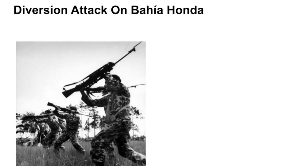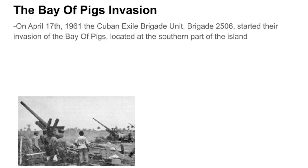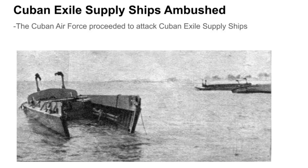On April 16, 1961, a small force of Cuban exiles was sent to Bahia Honda as a diversion to distract the Cuban army. On April 17, 1961, the Cuban exiled brigade unit, Brigade 2506, started their invasion on the Bay of Pigs on the southern part of the island. The CIA anticipated the attack would take Castro by surprise, but a radio station at the Bay of Pigs broadcasted every detail of the attack plan across the island, leading to the Cuban exiles being ambushed and their ships sabotaged by the Cuban air force.